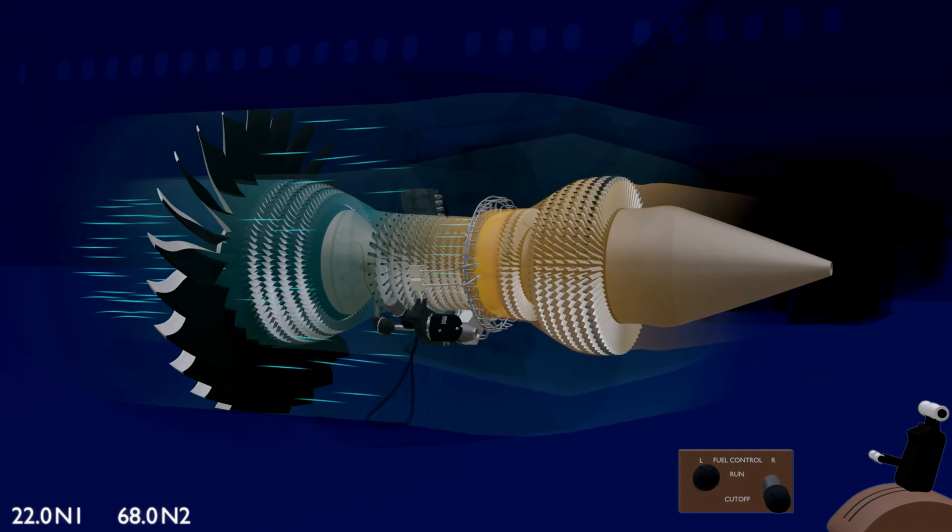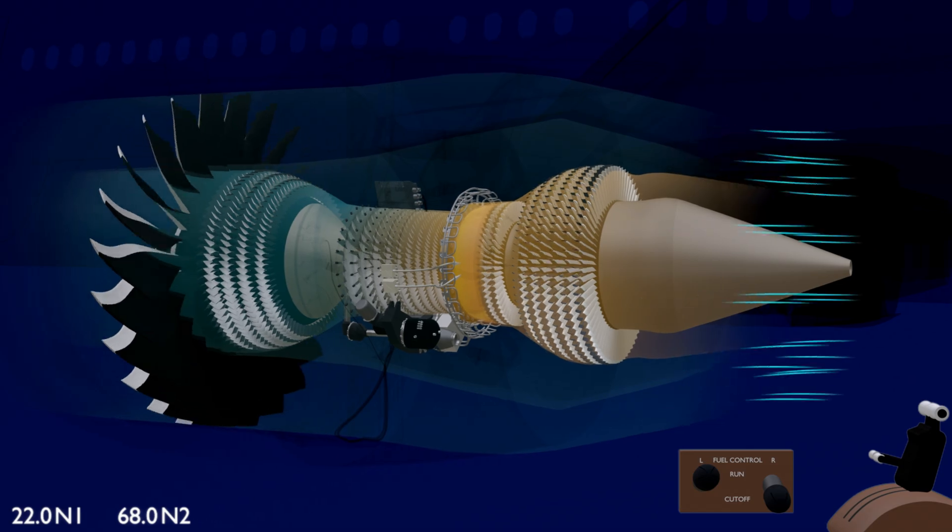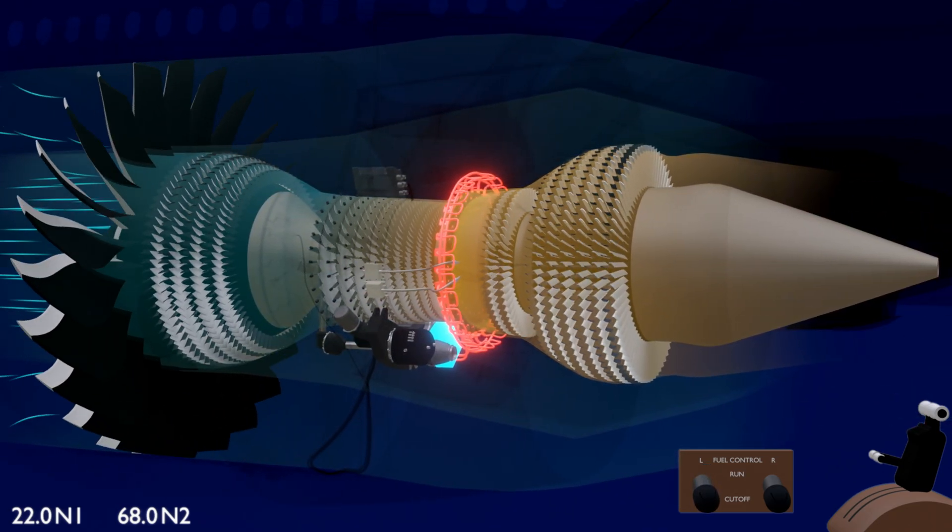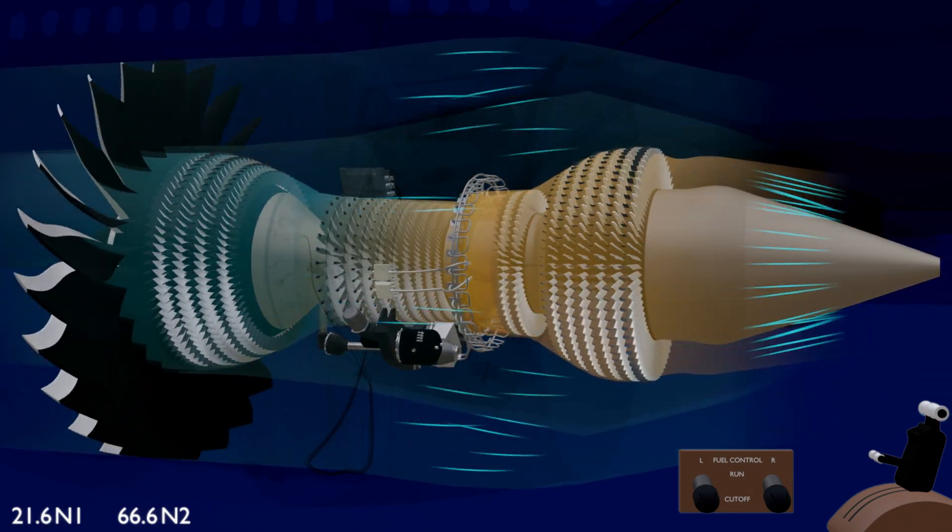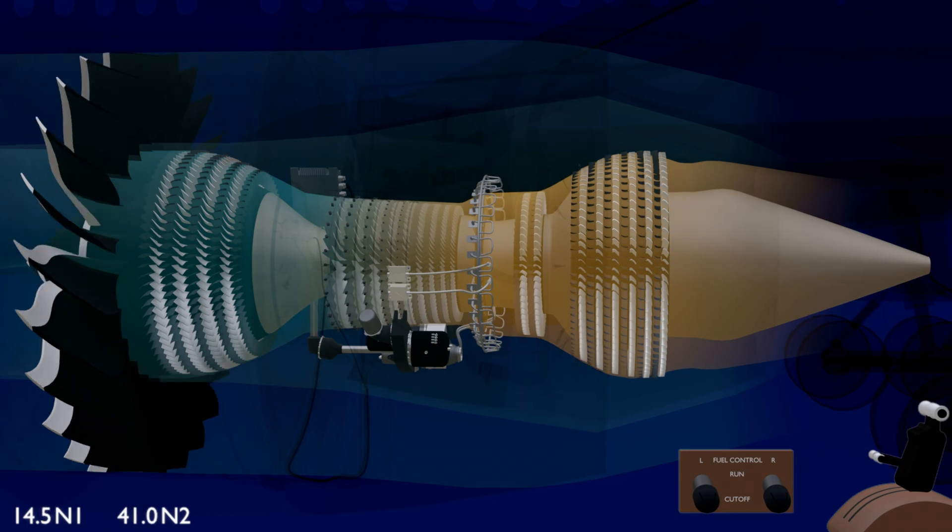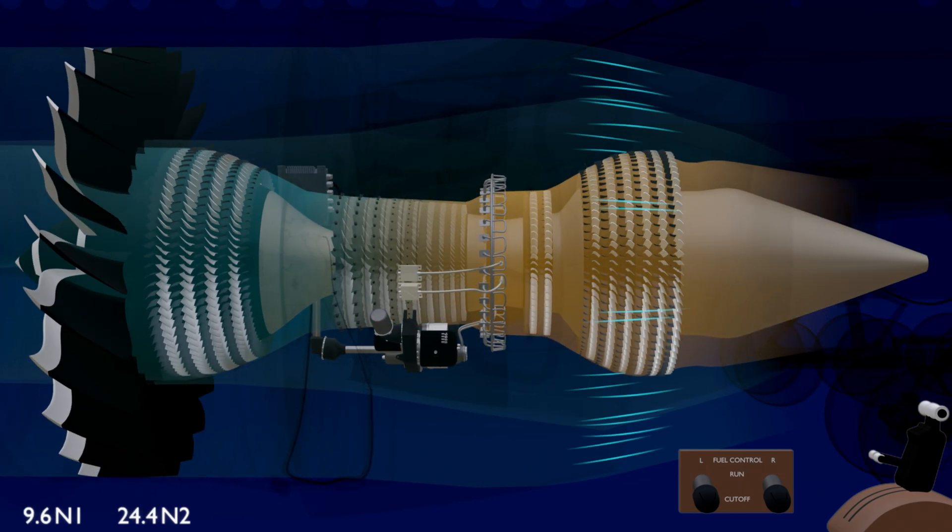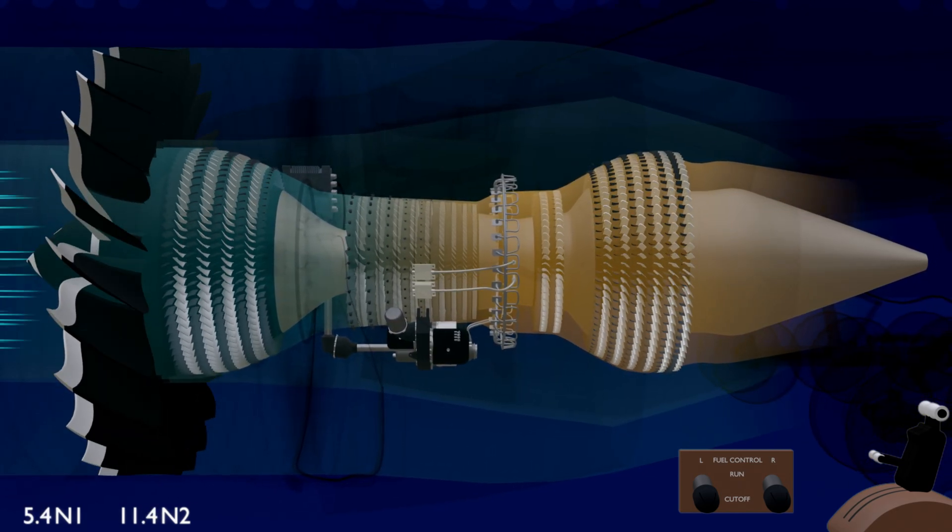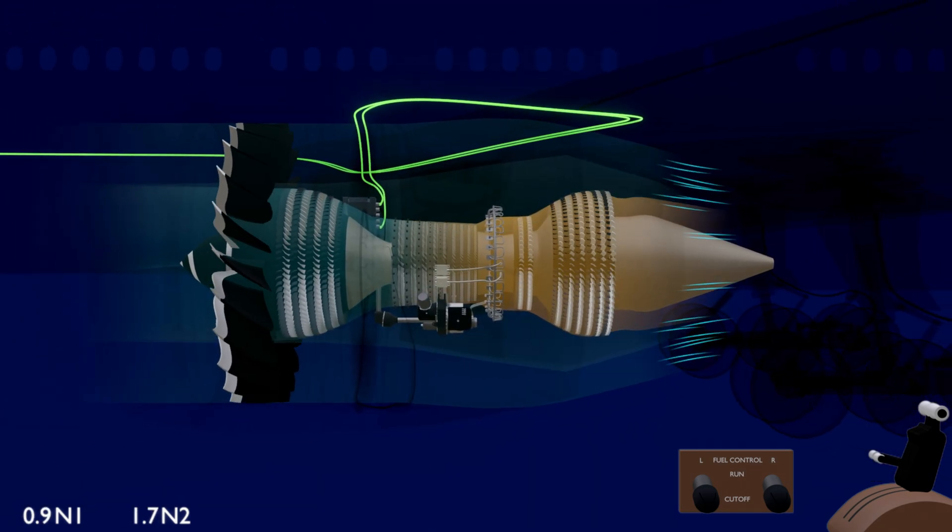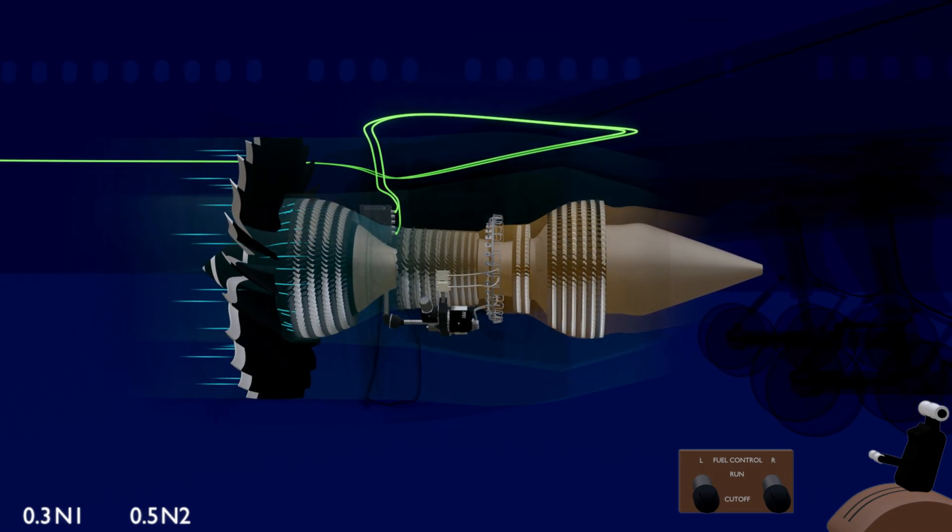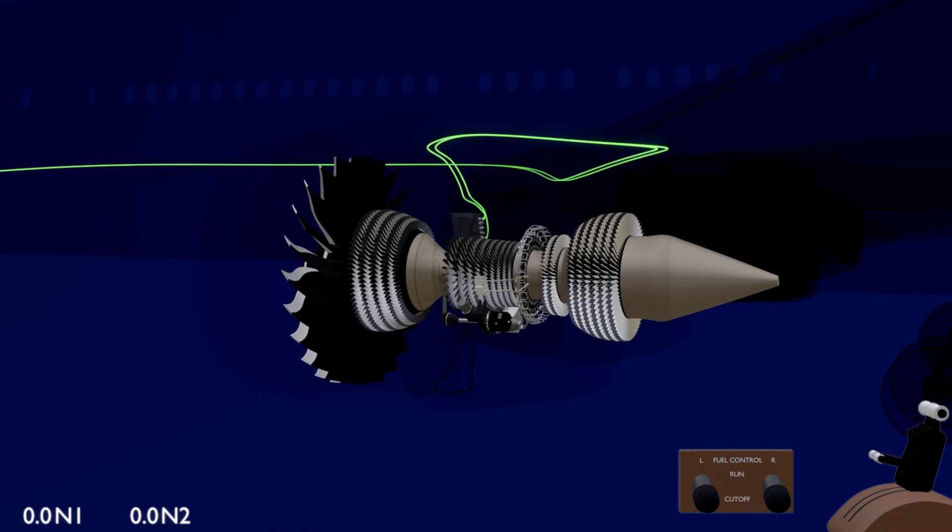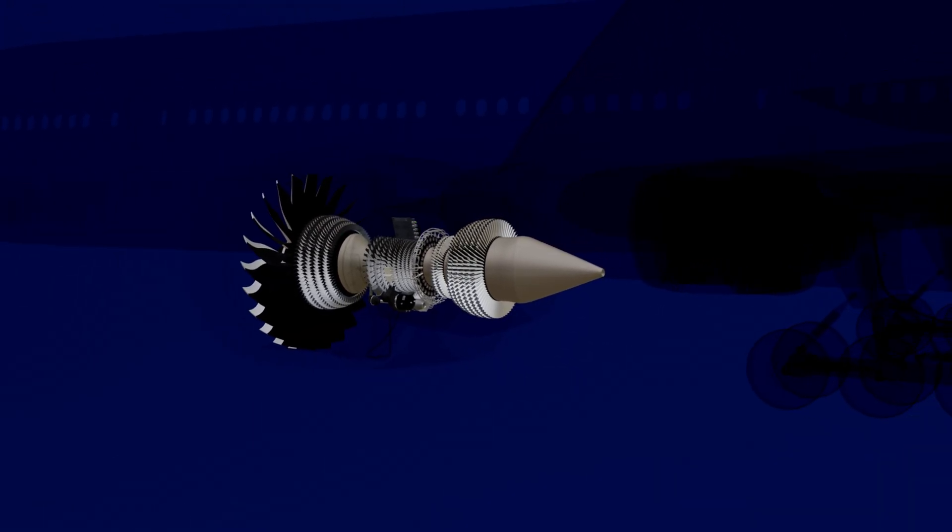Finally, let's shut down the engine. Moving the fuel control switch to cut off closes the fuel valve in the hydromechanical unit and stops the combustion. As the engine decelerates, the EEC starts to save all the parameters and fault data of the entire engine run. At 7% N2, the alternator power supply to the EEC is disconnected, and the EEC switches to the aircraft power supply. As the engine comes to a standstill, 5 minutes later the power supply to the EEC is disconnected.